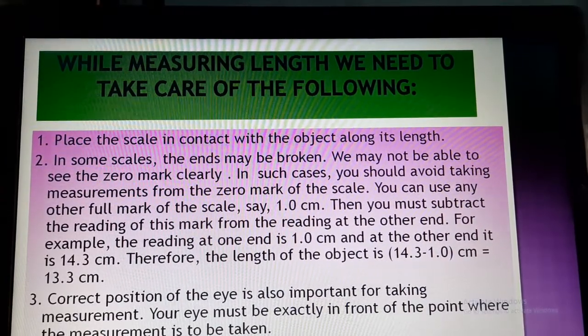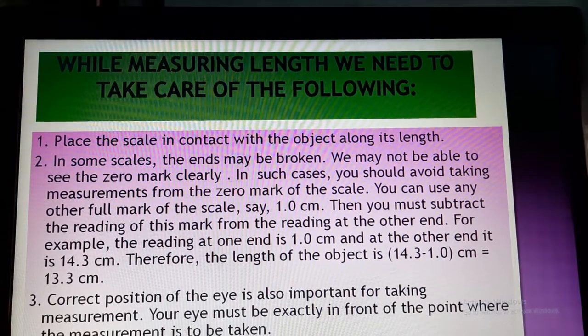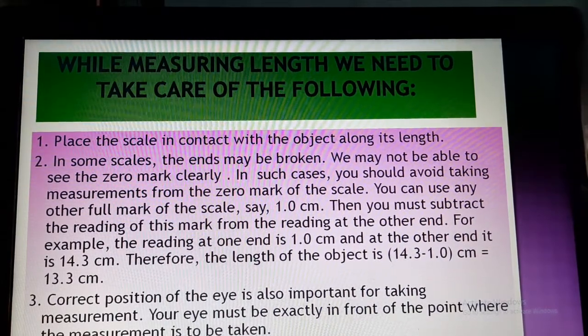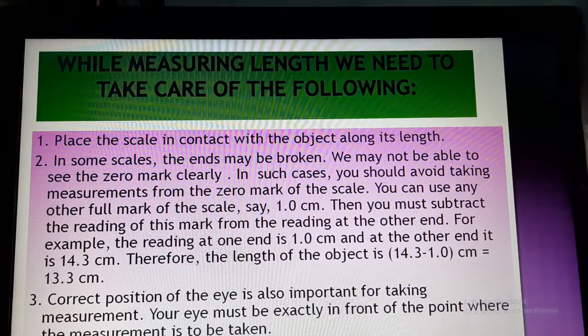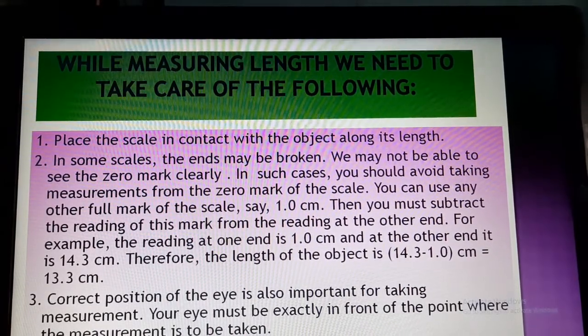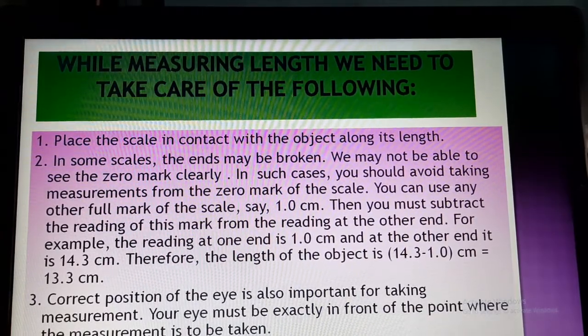And number 3, what I was telling at the beginning, correct position of the eye is also important for taking measurements. Your eye must be exactly in front of the point where the measurement is to be taken. You should have a straight contact with the measuring object and the ruler. I have explained this once more so that you are able to understand.